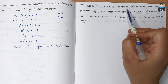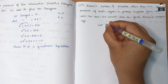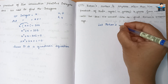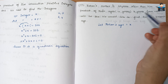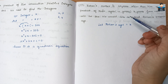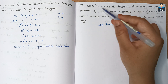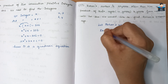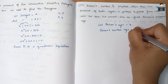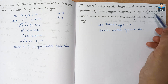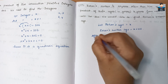Rohan's mother is 26 years older than him. Let Rohan's age be x. Rohan's mother's age will be x + 26.